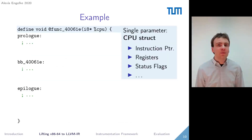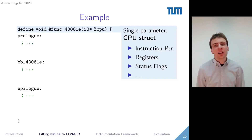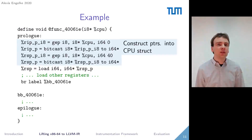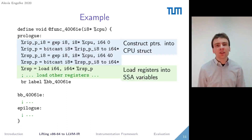We will now go through a simple example where we lift a single instruction to LLVM IR. First, we have the skeleton function, which takes a single parameter — a pointer to the CPU struct in memory. This structure contains the instruction pointer, the values of registers and status flags, and also the vector registers. In the function prolog, we construct pointers into the CPU structure for later use, and load all register values into single static assignment variables to avoid frequent memory accesses throughout the lifted code.